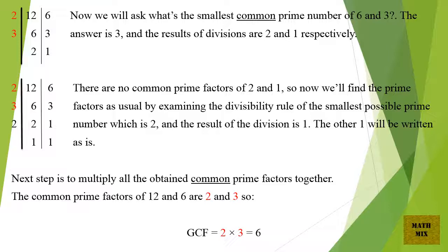There are no common prime factors of 2 and 1, so now we'll find the prime factors as usual by examining the divisibility rule of the smallest possible prime number, which is 2, and the result of the division is 1. The other one will be written as is. The common prime factors of 12 and 6 are 2 and 3, so GCF equals 2 times 3 which equals 6.